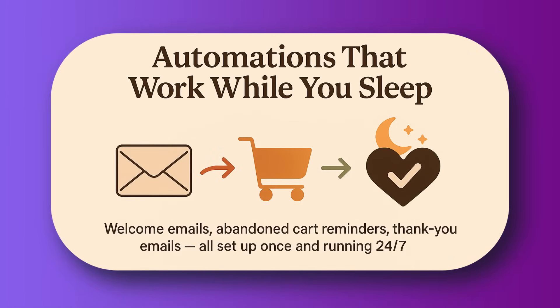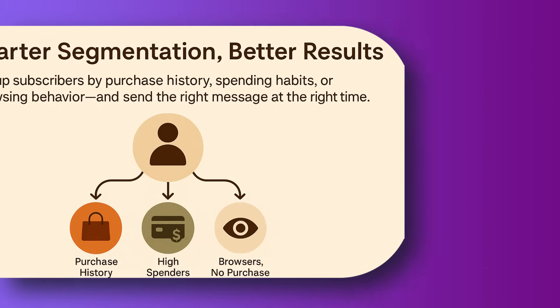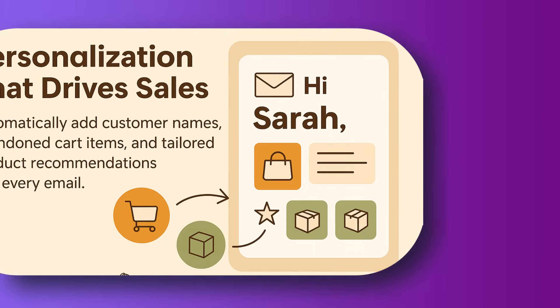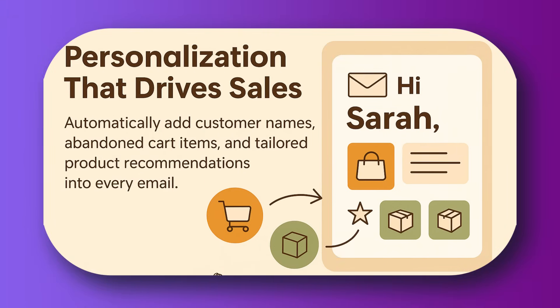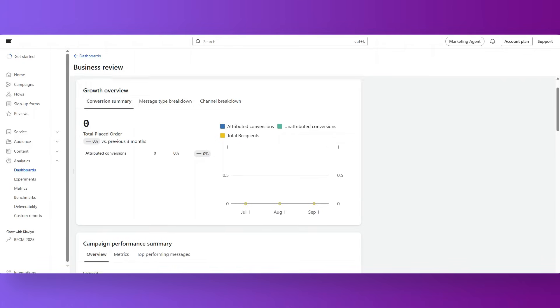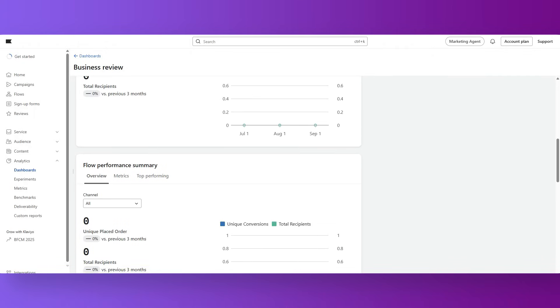First, automations. With Klaviyo, you can create welcome emails, abandoned cart reminders, and thank you emails — all set up just once and then running 24/7 for your business. You can also use segmentation to group your subscribers by purchase history, how much they spent, or even whether they just browsed and never bought. Personalization lets each email contain your subscriber's name, the products they left in their cart, and even product recommendations. With analytics, you don't have to guess if your email worked — Klaviyo shows you open rates, click-throughs, and actual revenue generated. For beginners, it is one of the best tools to learn because it is super beginner-friendly, but powerful enough to help you scale your store.